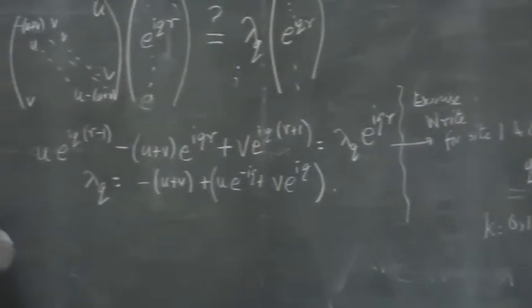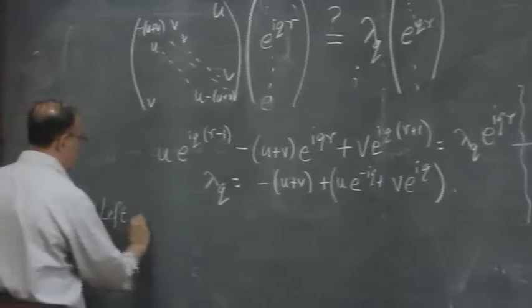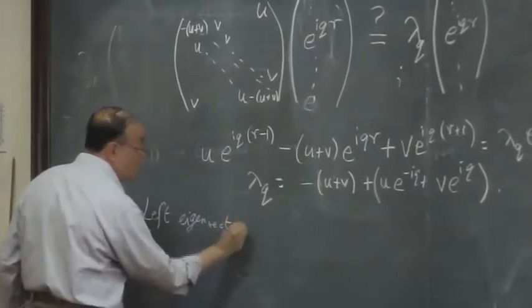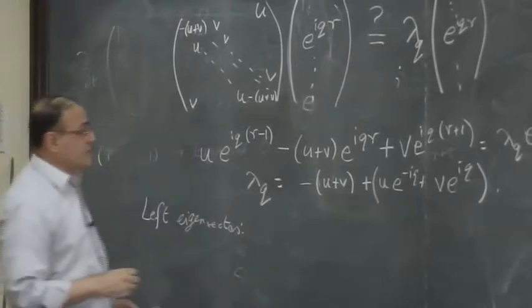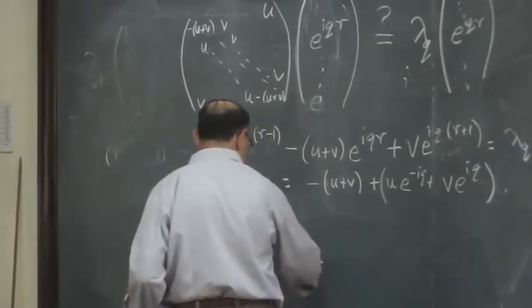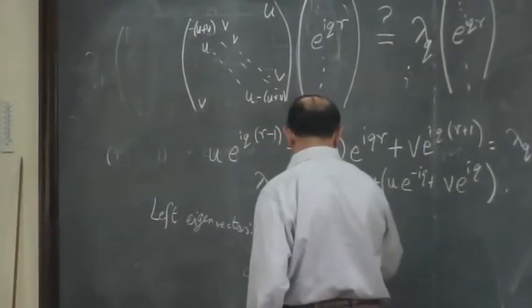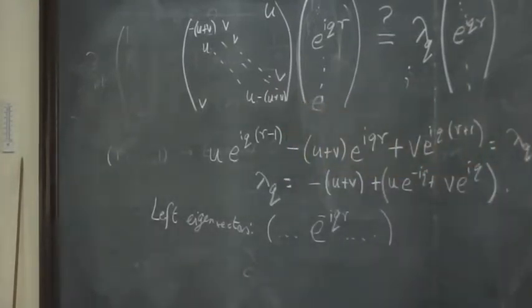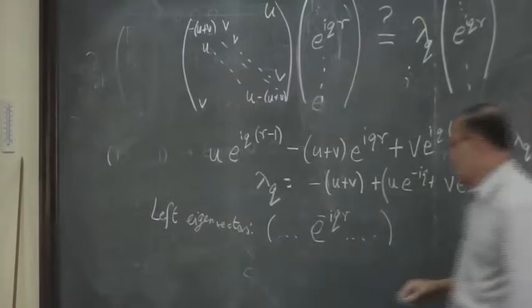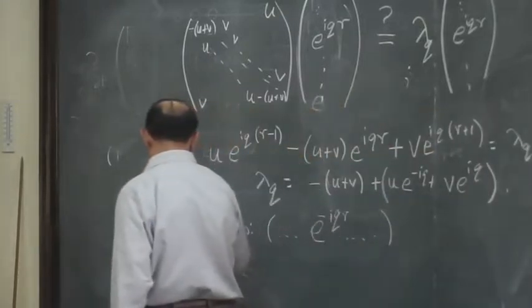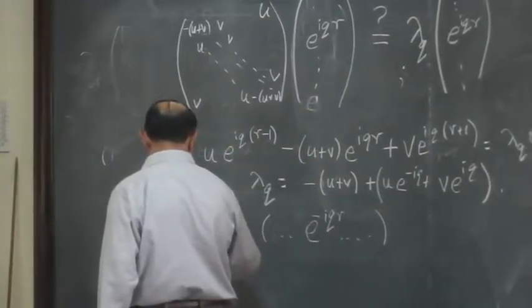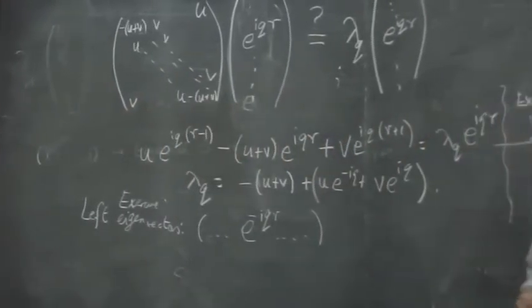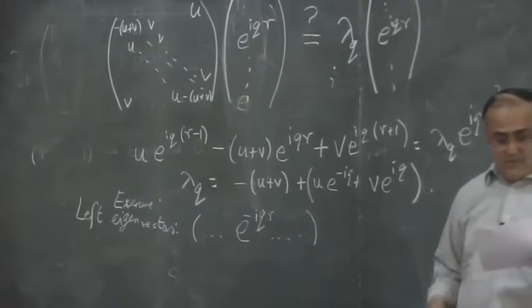What about left eigenvectors? Verify that the left eigenvector is actually the same, almost the same: e^(-iqr). Please verify. Exercise.